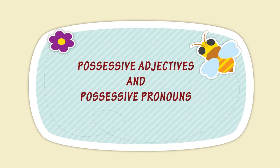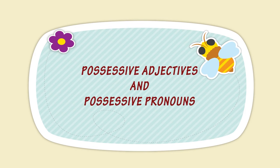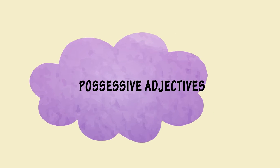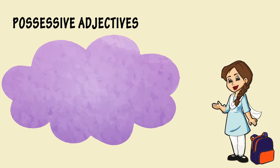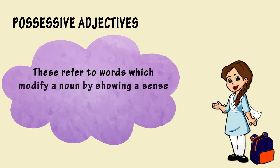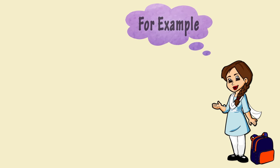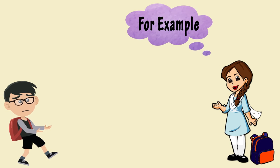Possessive Adjectives and Possessive Pronouns. Possessive Adjectives refer to words which modify a noun by showing a sense of belonging to a particular person or thing. For example: I have lost my book.